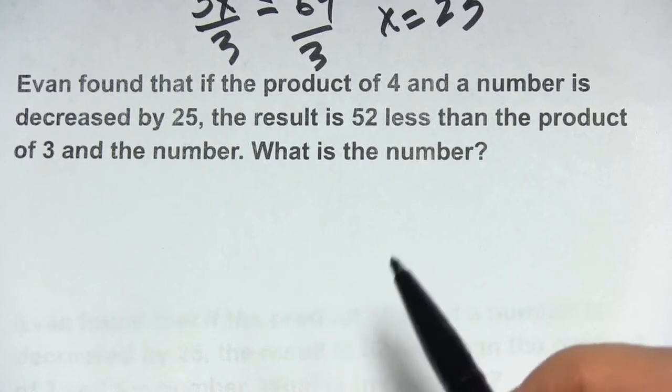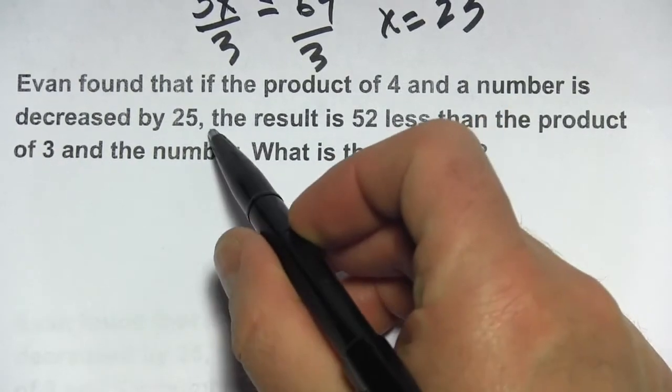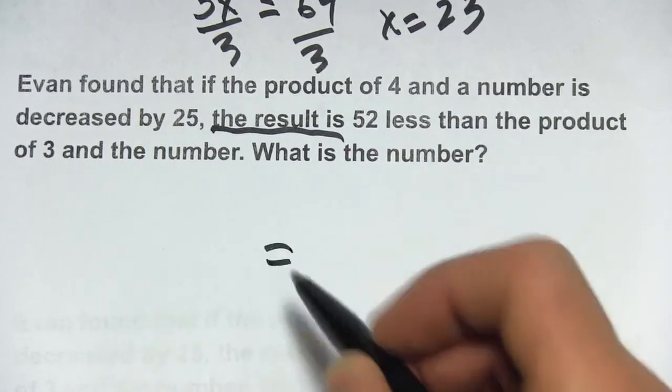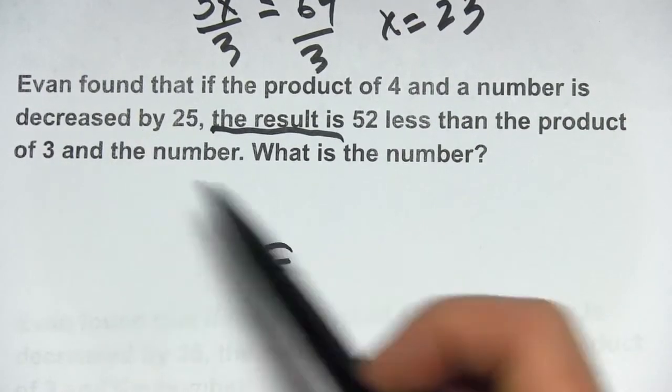Again, I'm going to look for the word 'is' here. And here we go, 'the result is'. That's a keyword that often stands in for the equal sign. And so we'll have two sides of the equation, one on the left, one on the right.